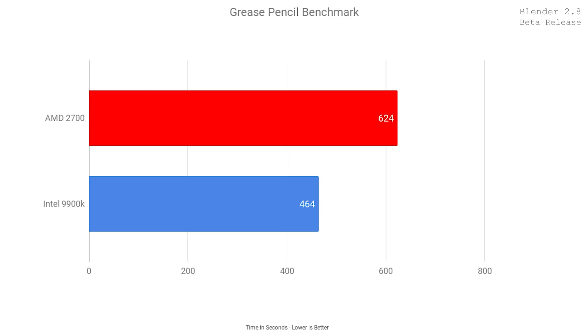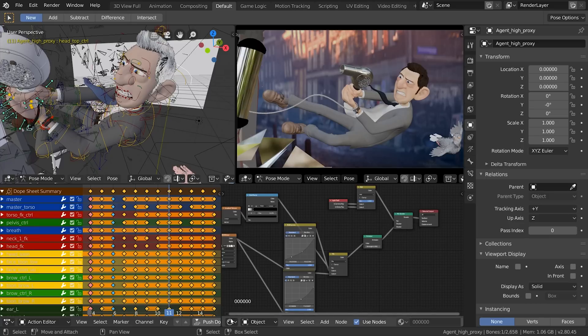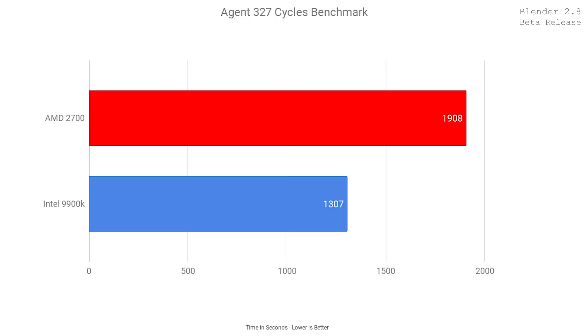I also included one Cycles benchmark to give an overall view of CPU performance in Blender. I took the newest Agent 327 benchmark and rendered it on both systems. The AMD system took 31 minutes and 48 seconds, and the Intel system took 21 minutes and 47 seconds — 37% faster running at those higher core clocks. Looking at the task manager, the Ryzen system was sitting at around 3.3 GHz all cores while rendering, but the i9-9900K without any overclocking was running at a consistent 4.6 GHz. The i9-9900K does run pretty hot and temperatures did start to thermal throttle a little bit during this benchmark.